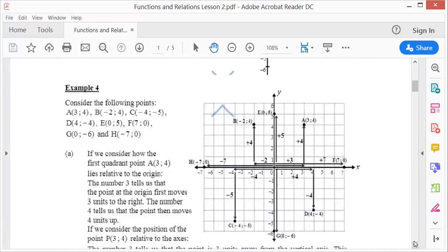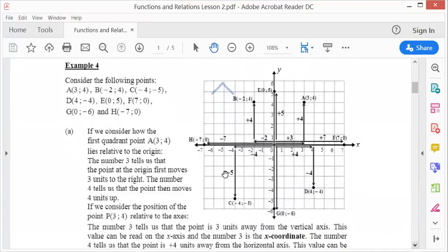All right, let's look at the example. Look at those points A, B, C, D, E, F, G, and H. Look at A for instance: x is three and y is four, and both are positive, so that means first quadrant, isn't it? Because x is three, there you are, and y is four.